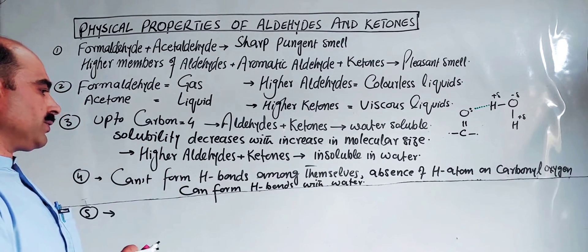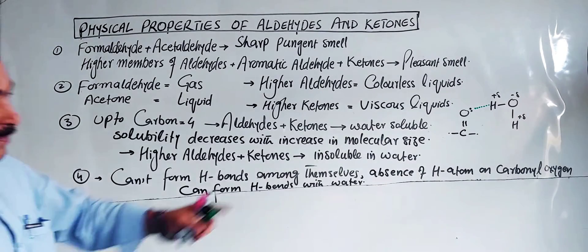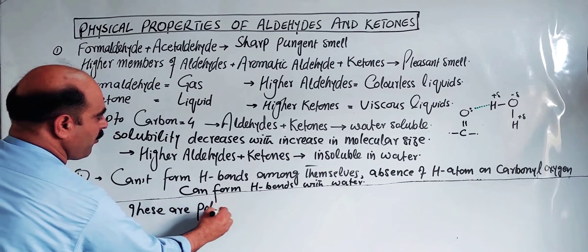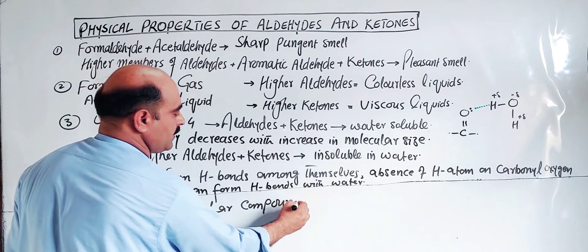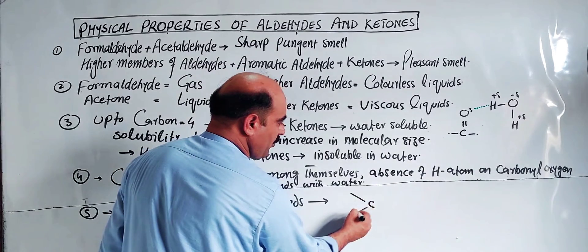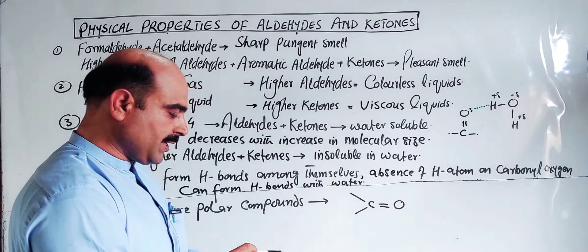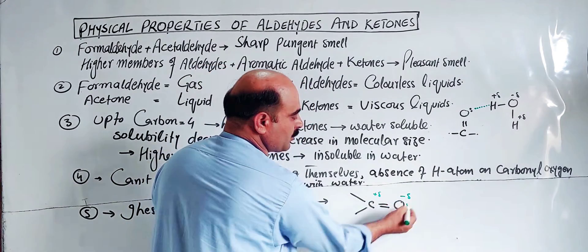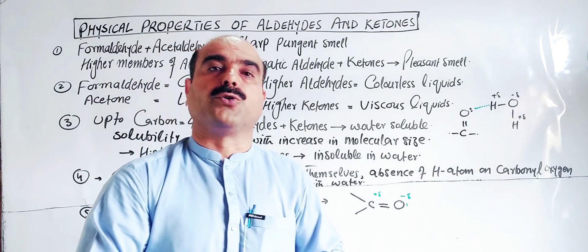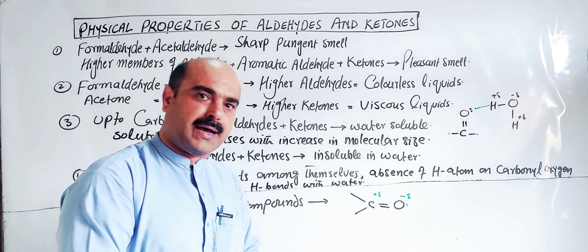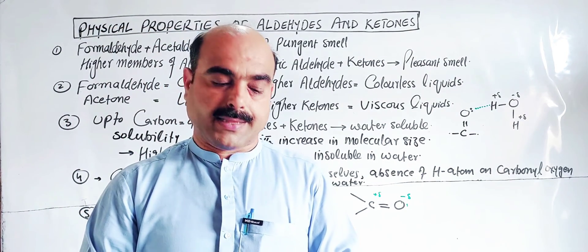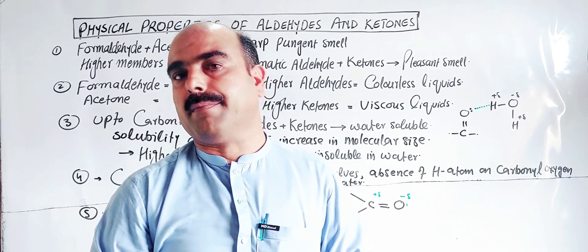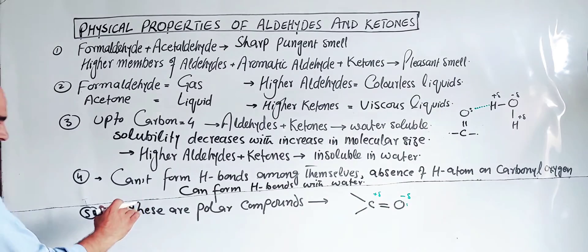Aldehydes and ketones are polar compounds. They are not non-polar — the carbonyl group makes them polar because oxygen has greater electronegativity than carbon, creating a partial positive on carbon and using the lone pair of electrons on oxygen. When polar molecules attract each other strongly, more energy is needed to break those forces, so their boiling points are higher than non-polar organic compounds.